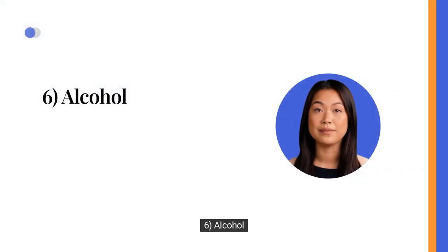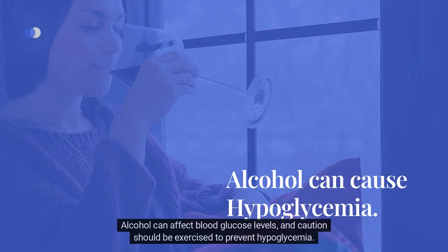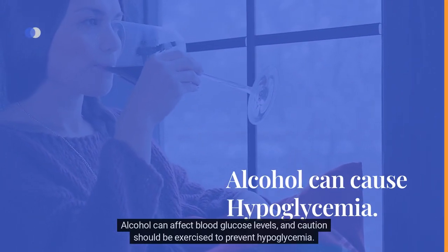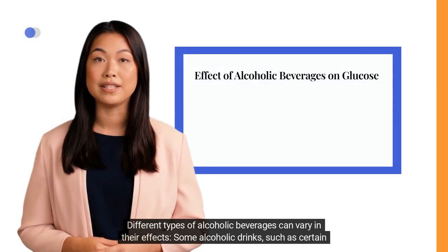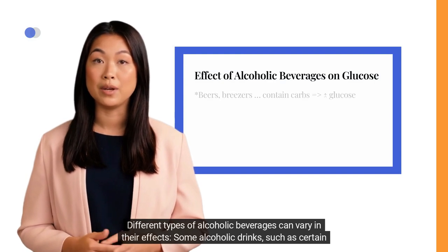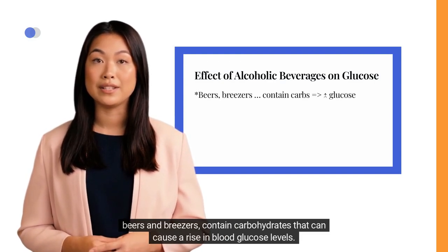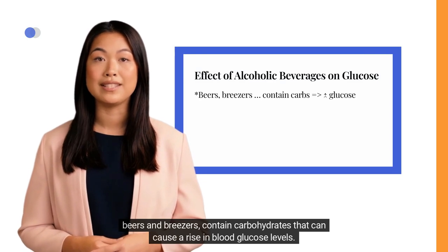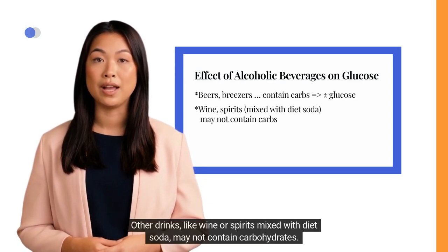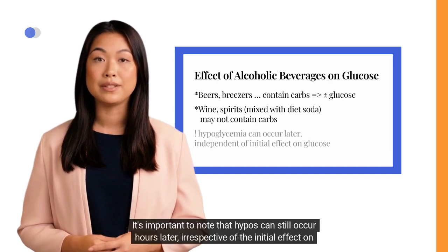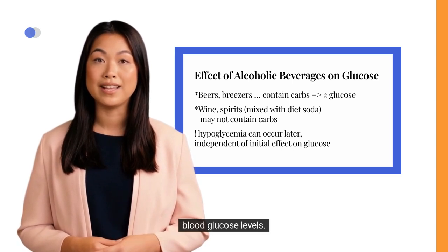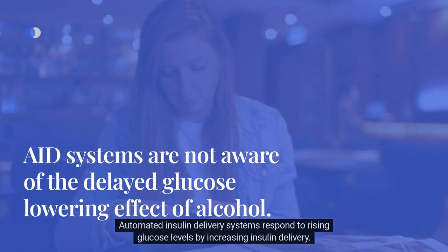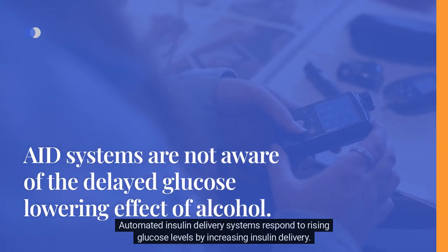6. Alcohol. Alcohol can affect blood glucose levels, and caution should be exercised to prevent hypoglycemia. Some alcoholic drinks, such as certain beers and breezers, contain carbohydrates that can cause a rise in blood glucose levels, while other drinks like wine or spirits mixed with diet soda may not. It's important to note that hypoglycemia can still occur hours later, irrespective of the initial effect on blood glucose levels. Automated insulin delivery systems respond to rising glucose levels by increasing insulin delivery.